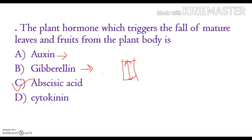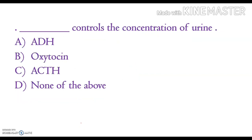The third hormone, cytokinin, has the function of delaying aging in leaves and flowers. Moving on to the next question: dash controls the concentration of urine. The options are ADH (anti-diuretic hormone, also known as vasopressin), oxytocin, and ACTH (adrenocorticotrophic hormone).